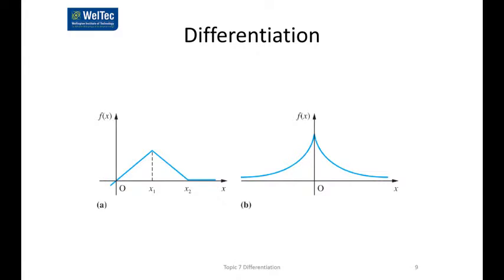Similarly, if you look at these two graphs, they're not differentiable everywhere either. They are differentiable everywhere except — for the first one — except at x1, and for the second one, they're differentiable everywhere except at 0. So if we excluded that point it would be differentiable, and if we excluded that point it would be differentiable. But it's not differentiable everywhere, because we have these couple of points where it's not differentiable.